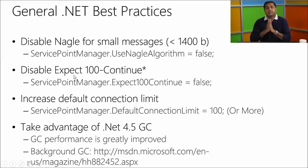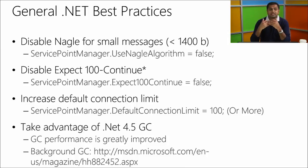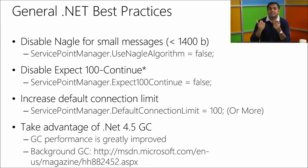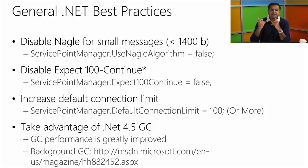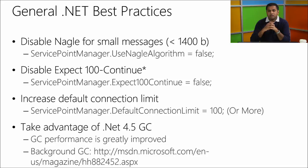The first .NET best practice: disable nagling for small messages, because it creates delayed ACK, especially if the message is less than 1,400 bytes. We frequently get requests asking why queue messages or table inserts are very slow. Almost always it comes down to disabling nagling so you don't have the delayed ACK problem.